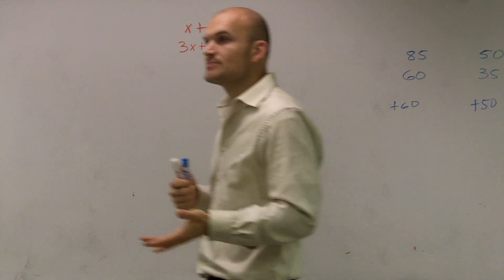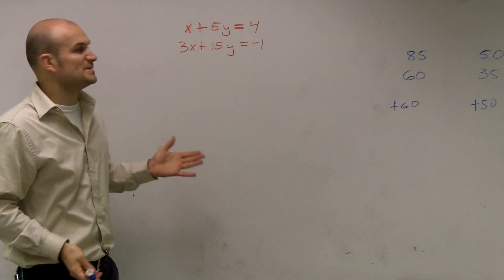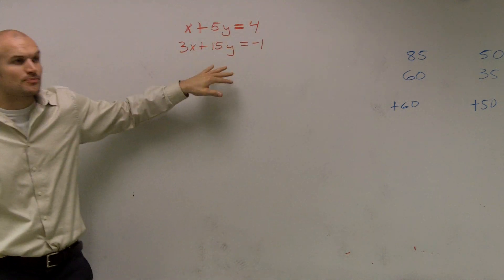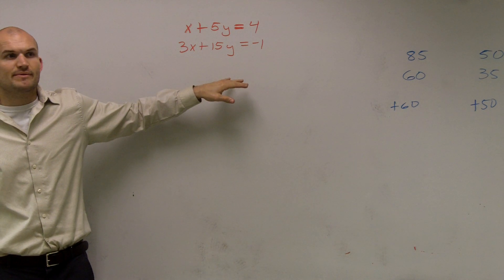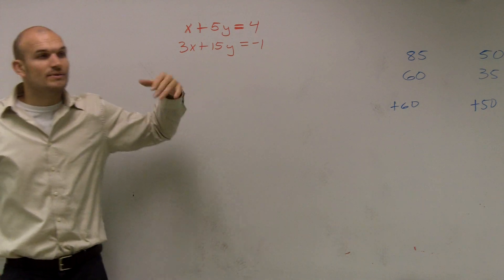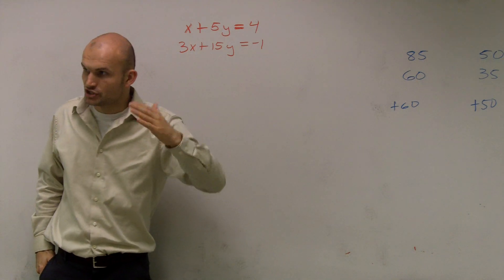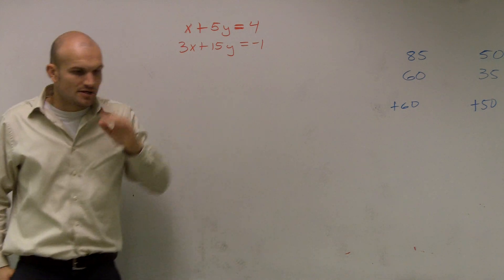Now, previously, when we've done substitution problems, it was very easy because we said x equaled this or y equaled that. But if we look at this problem, do we have x equals or y equals anywhere? Does anybody say it? No. So, what we need to do for this problem is we need to manipulate one of the equations or change one of them so that one of them equals, or x equals something or y equals something.